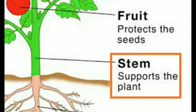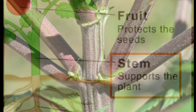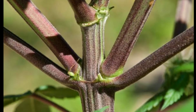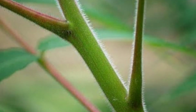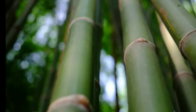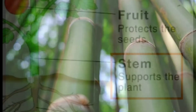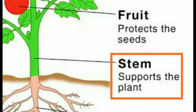The height, shape, and size of a plant depends upon the stem. The stem carries out the functions of production, conduction, and storage of food. In some plants, it also has the function of reproduction. It gives support to other parts of the plant.